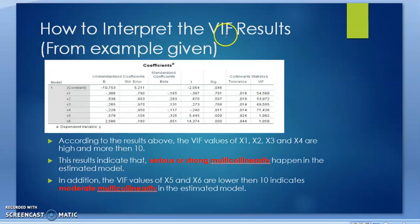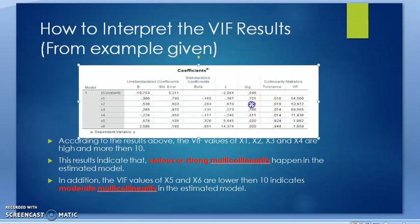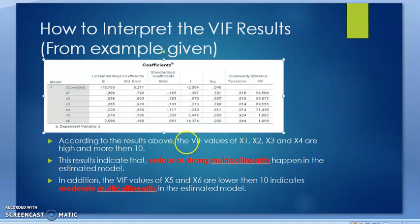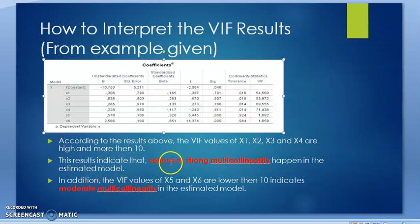How to interpret the VIF result from the given example? According to the result, the VIF value of X1, X2, X3, and X4 are highly more than 10. These results indicate that a strong, serious multicollinearity problem exists in the estimated model. These four values of VIF indicate serious multicollinearity.